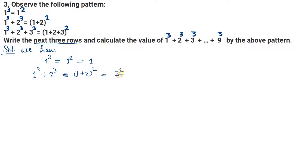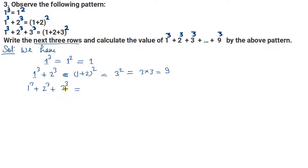1 plus 2 होजाएगा 3, और 3 का square होजाएगा 9. यानी natural numbers को अलग-अलग cube करके add करें, तो उसका result वही आएगा जब हम natural numbers को simply add कर दें और जो result आए उसका square कर दें। दोनों का value exactly equal आता है। यह बहुत useful formula है।